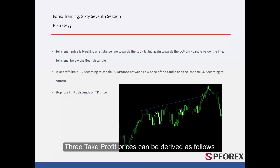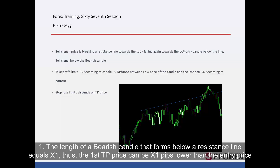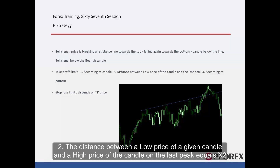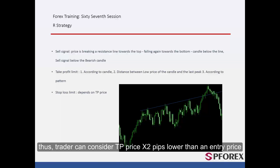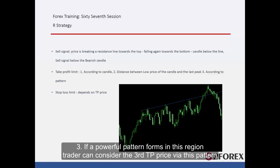Three take profit prices can be derived as follows. 1. The length of a bearish candle that forms below the resistance line equals X1; the first TP price can be X1 pips lower than the entry price. 2. The distance between the low price of the given candle and the high price of the candle on the last peak equals X2; the TP can be X2 pips lower than the entry price. 3. If a powerful pattern forms in this region, a trader can consider the third TP price via this pattern.